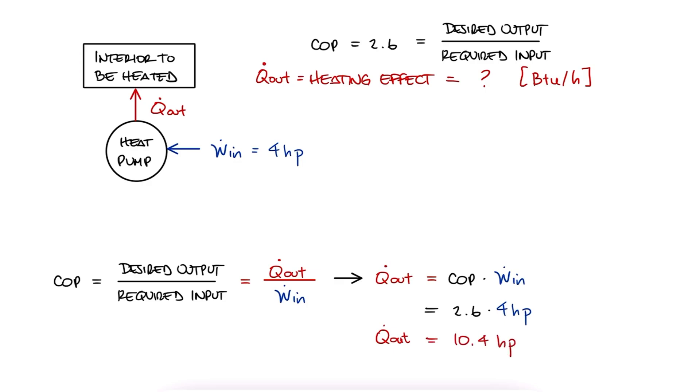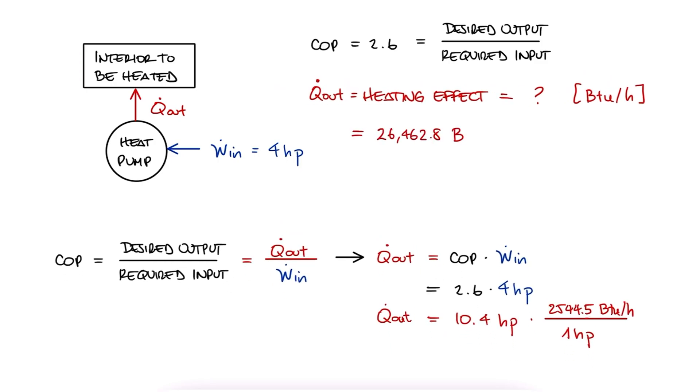Of course, the problem specifically asks for Q.out to be in BTU per hour, so we do a simple unit conversion knowing that 1 horsepower is equal to 2544.5 BTU per hour, and find that the heat provided is 26462.8 BTU per hour.